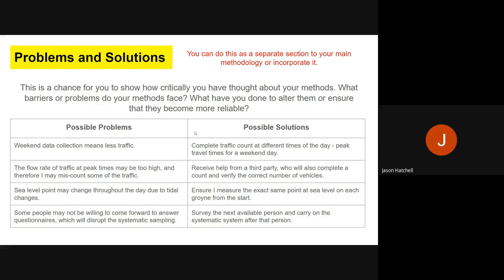First problem: weekend data collection means less traffic. If you're doing a traffic count on Saturday, you might have less traffic than Monday to Friday, so it might not represent that place at all times. To make it more reliable and have a solution, you might complete the traffic count at different times of the day on that Saturday and try to do it at peak times for a weekend day.